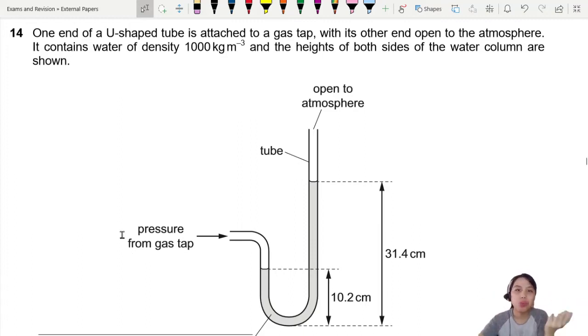Here's a U-shaped tube attached to a gas tap, so the gas is being pushed in. On the other end it's open to atmosphere. Water is inside this tube with density of 1000 kg/m³.